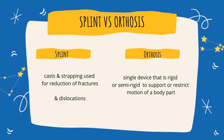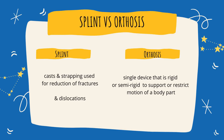Let me differentiate the terms splint and orthosis. According to the American Society of Hand Therapists, a splint refers to cast and strapping used for reductions of fractures and dislocations. This term is most commonly used by physicians. An orthosis is a single device that is rigid or semi-rigid to support or restrict motion of a body part. The terms splint and orthosis are often used synonymously.